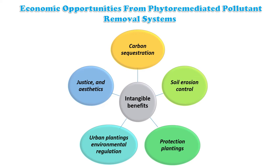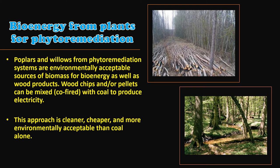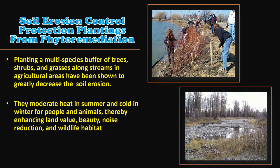For bioenergy, plants like poplar and willow from phytoremediation systems are environmentally acceptable sources of biomass. Wood chips or pellets from these plants can be mixed or co-fired with coal to produce electricity. This approach is cleaner, cheaper, and more environmentally acceptable than using coal alone.